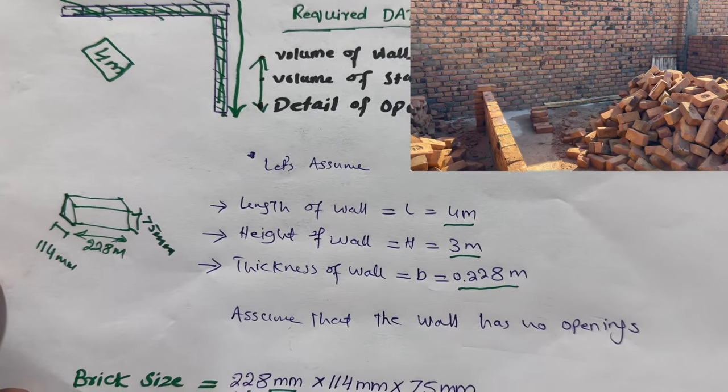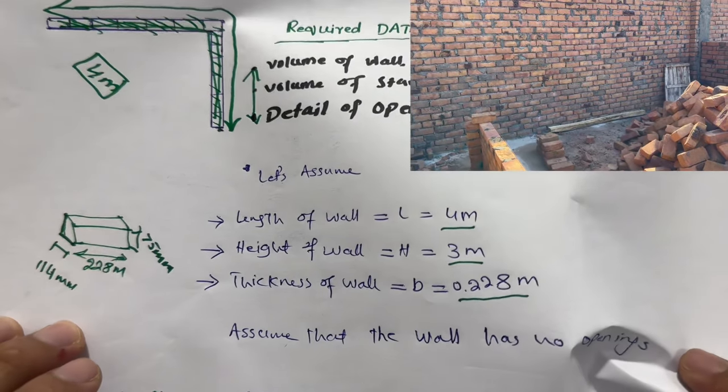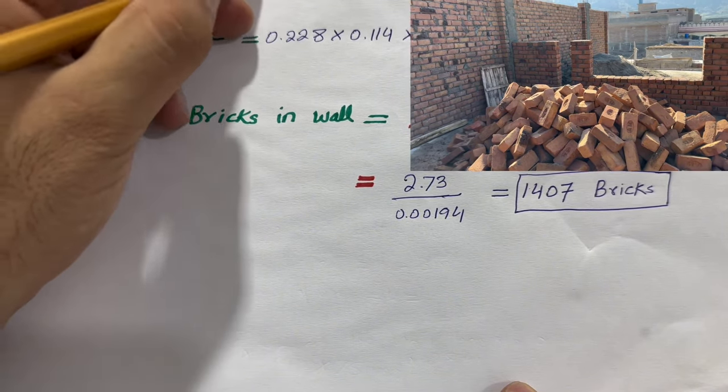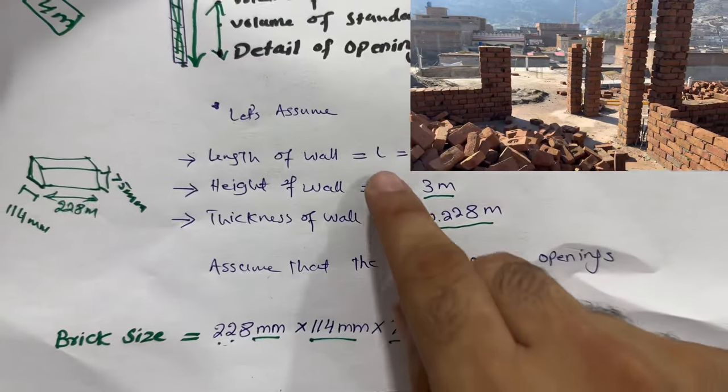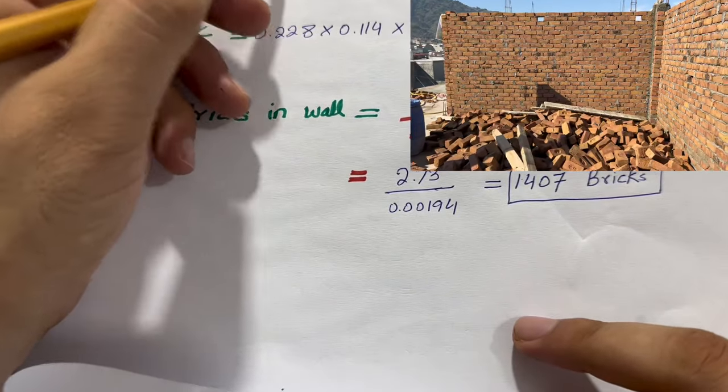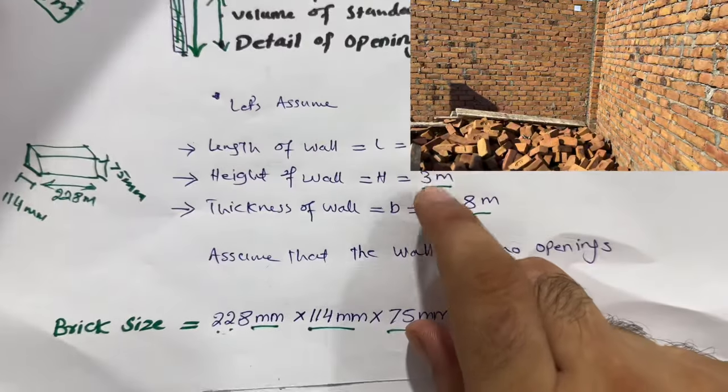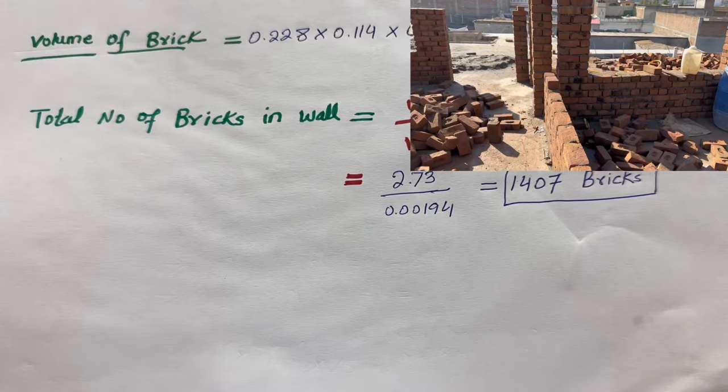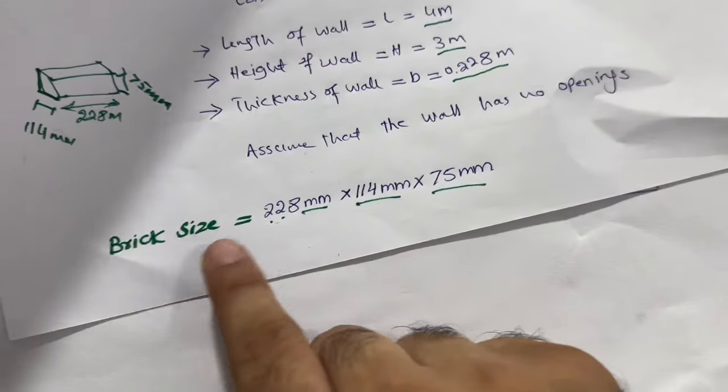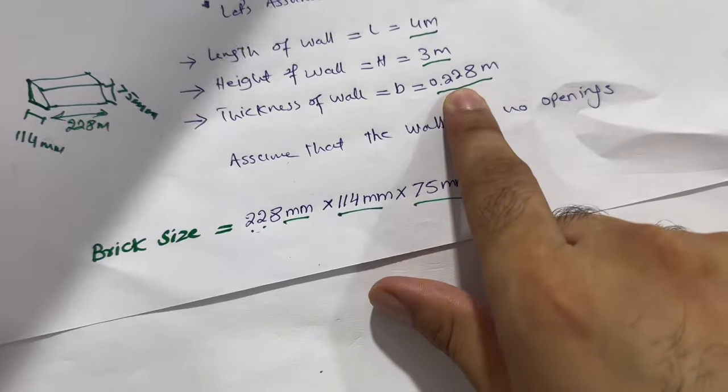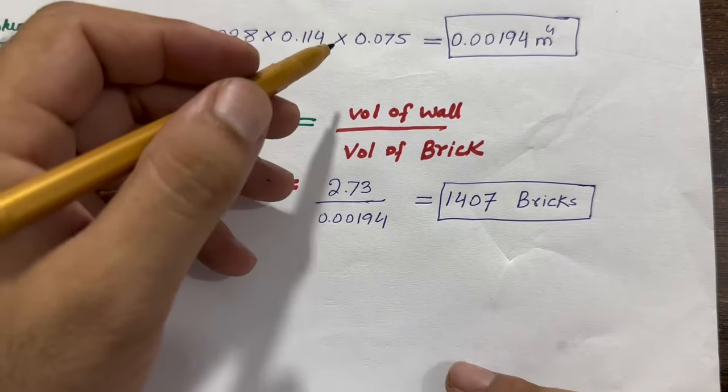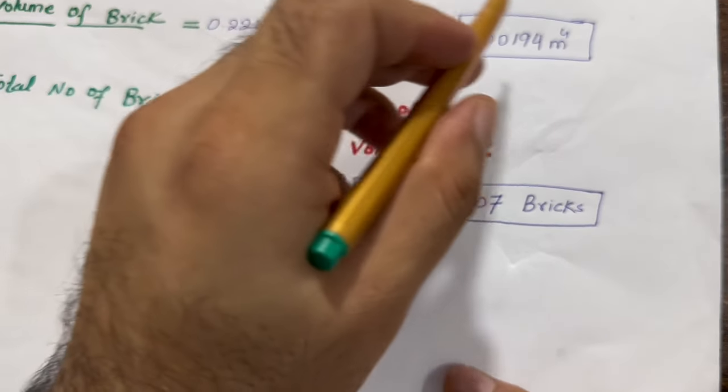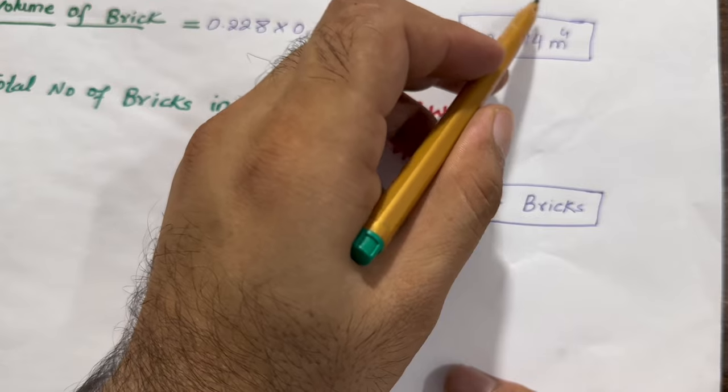Now let me find the volume of wall. The volume of wall is length is 4 meter, 3 meter is the height of the wall, and 0.228 meter is the thickness of the wall. When you do calculation, you will get the total volume of the wall which is 2.73 meter cube without mortar. This is only bricks without the mortar.